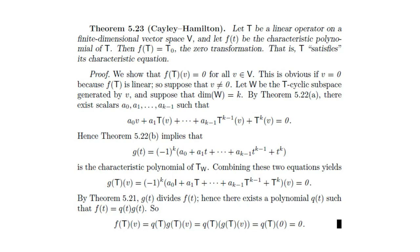To show that f(T) is the zero transformation, we want to show that f(T) applied to every vector v in vector space V is zero. Now if the vector v is itself zero, then f(T), being linear, will take zero to zero. So let us assume v is non-zero. Let W be the cyclic subspace generated by v, and suppose that the dimension of W is k.